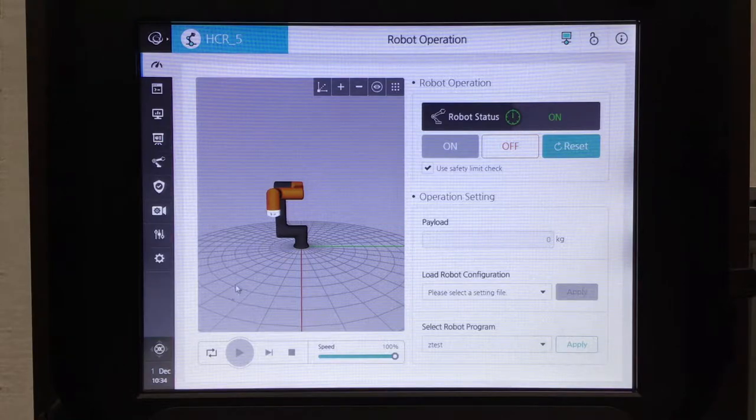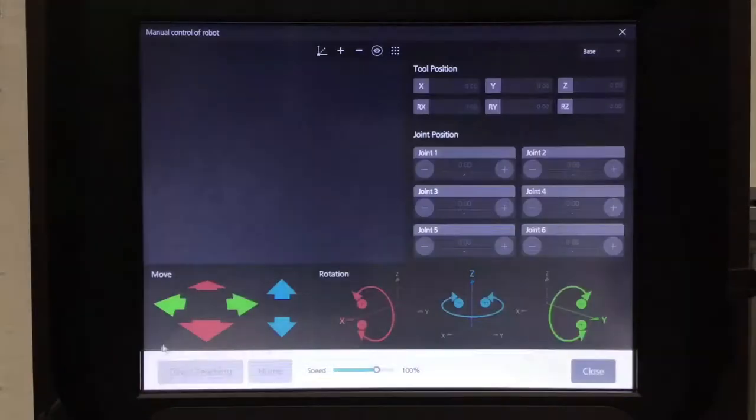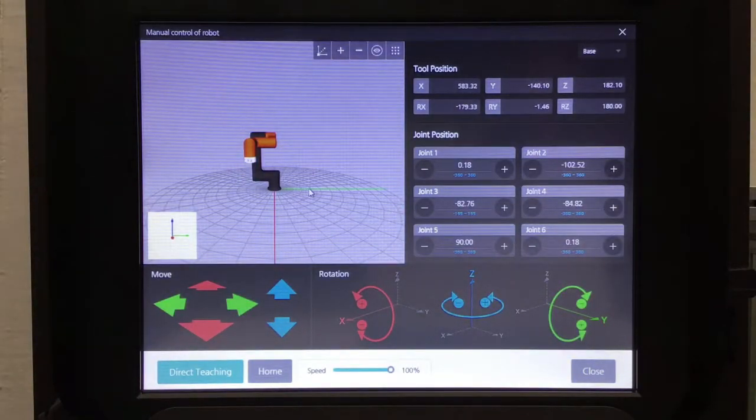So to get to the manual move screen you can go down to the bottom left corner and see the circle with the arrows, you click on that. This is the manual move screen, here is where you can move the robot in any direction you want.